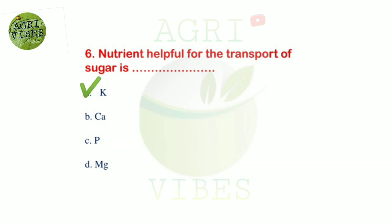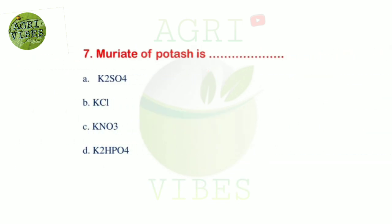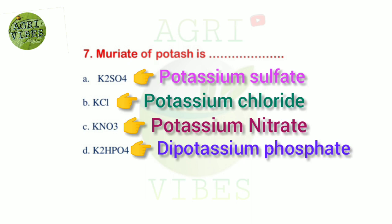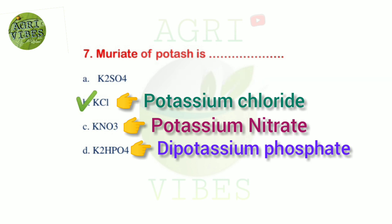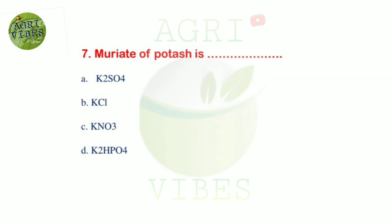Next question: what is the chemical formula for muriate of potash? Options: K2SO4, KCl, KNO3, and K2HPO4. Correct answer is option B, KCl — potassium chloride means muriate of potash.